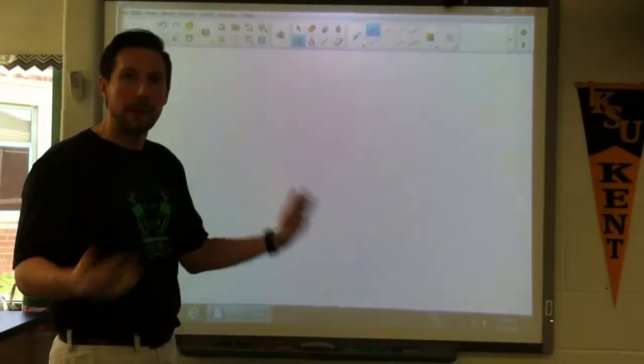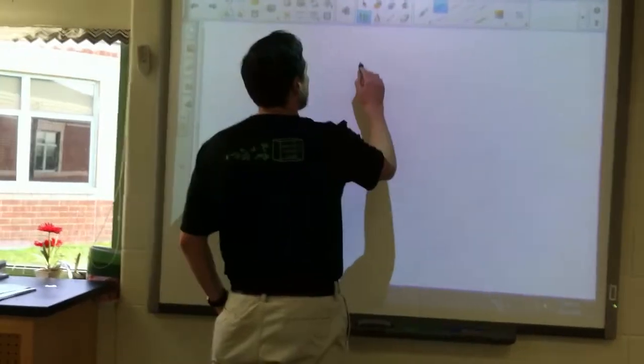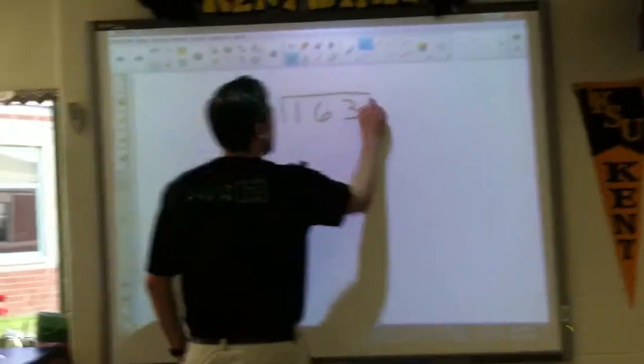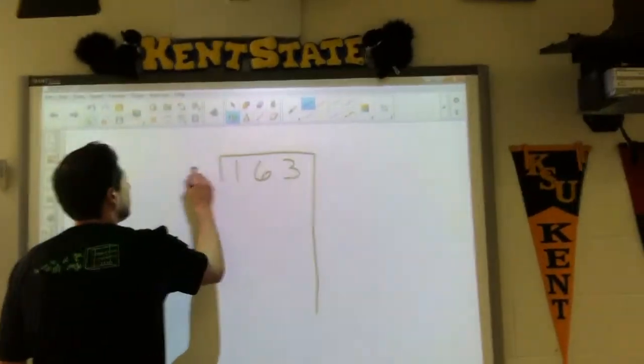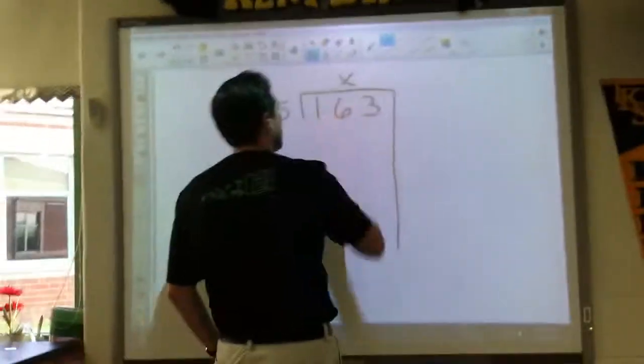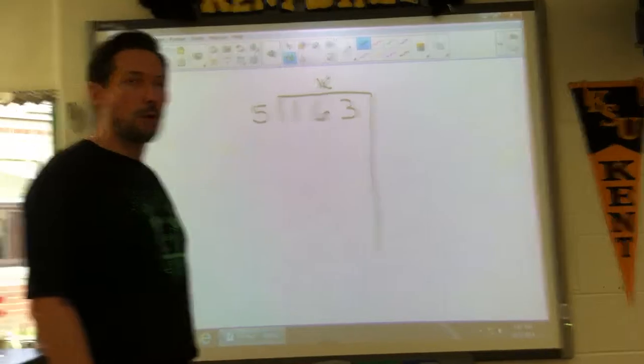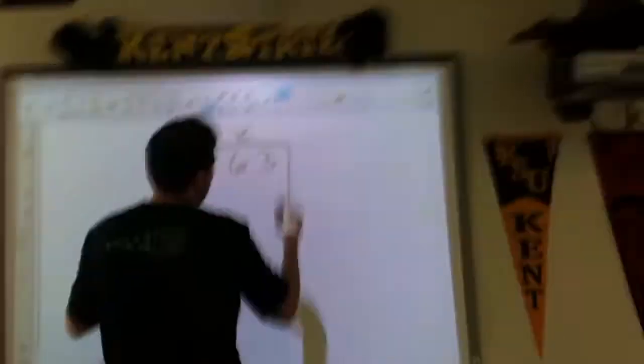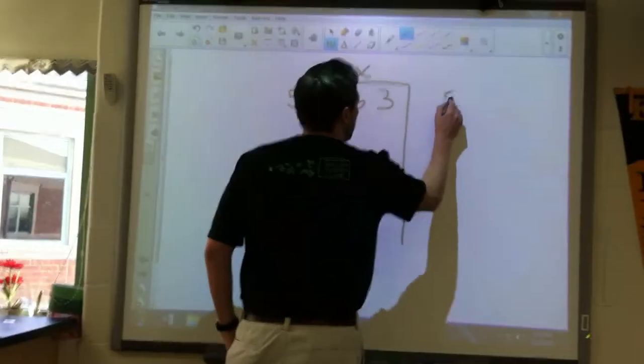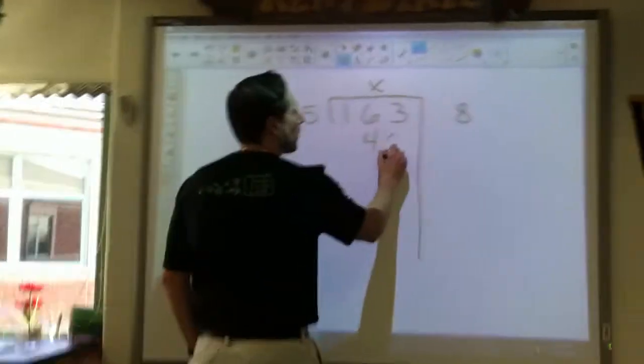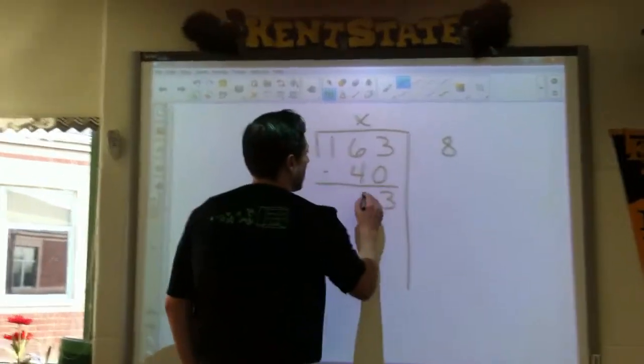Let's go ahead and do another one. Let's go a little bit bigger this time. Let's do maybe 163 divided by 5. Put my x up there. I can say to myself, well I know that 5 times 8 is 40. So let's say that was the fact I knew for 5, 5 times 8. I'll put my 8 over here. I will subtract 40.